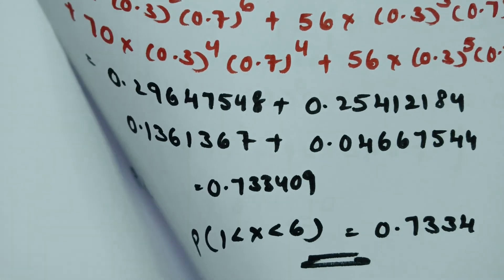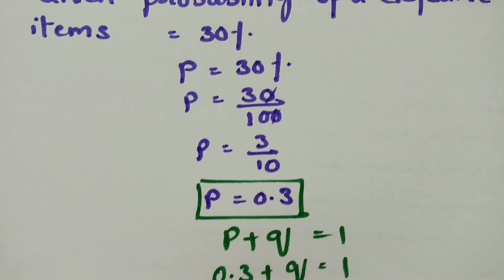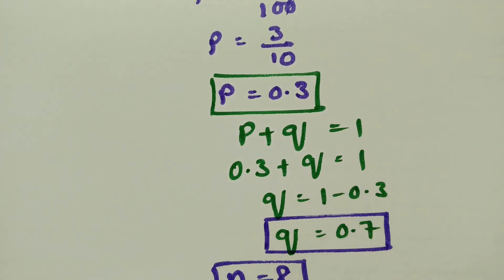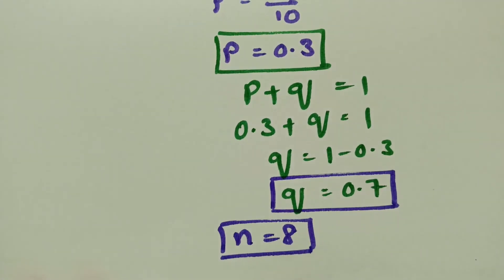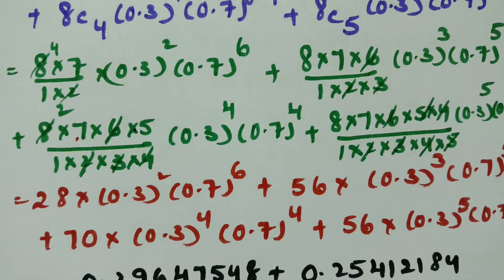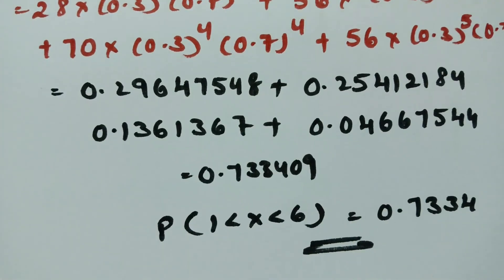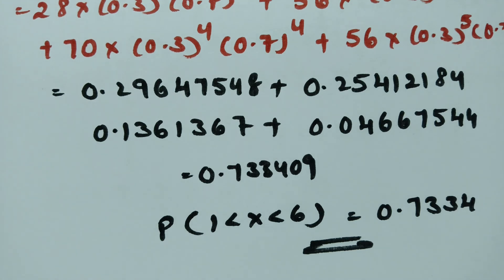So P = 0.3, Q = 0.7, and n = 8 are the key values to substitute into the formula. If you follow these steps and calculate carefully, the answer will come out correctly. Thank you so much for watching — if you liked this video, please share it with your friends and subscribe to the channel.